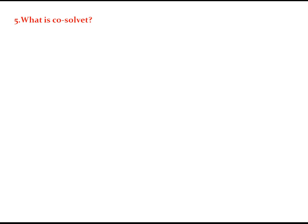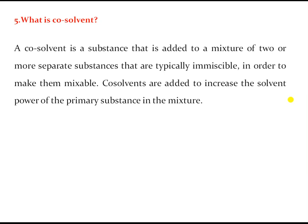Final question — what is a co-solvent? A co-solvent is a substance added to a mixture of two or more typically immiscible substances in order to make them miscible. Co-solvents are added to increase the solvent power of a primary substance in the mixture, thereby enhancing the mixing of two otherwise immiscible liquids. This concludes the determination of solubility of benzoic acid at room temperature.